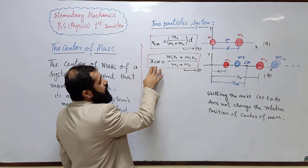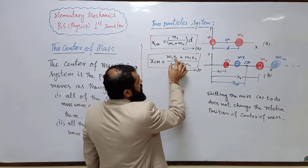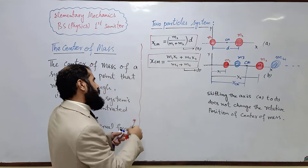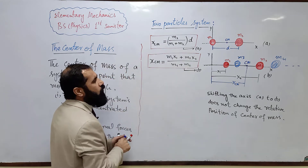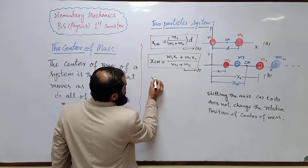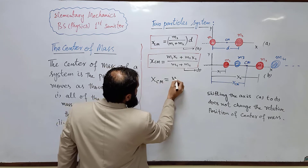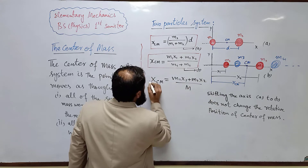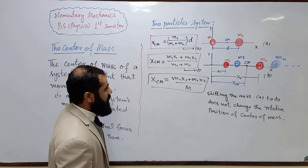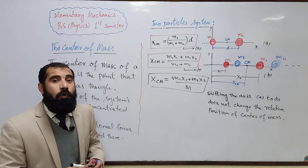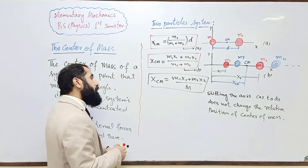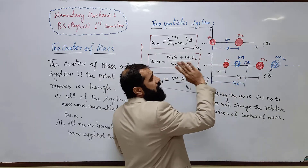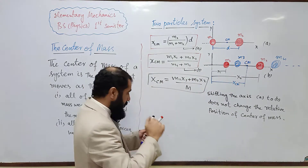The center of mass can be located using the formula: x_cm = (m1·x1 + m2·x2) / (m1 + m2), where (m1 + m2) is the total mass M of the system. In more general form: x_cm = (m1·x1 + m2·x2) / M. Now if we have more than two particles — a many-particle system — but still along the x-axis (one-dimensional case), the same principle applies.